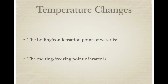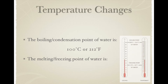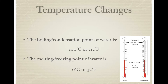Look at the middle of the sheet at the temperature where these changes happen. For water, the boiling and condensation point is 100 degrees Celsius, or 212 degrees Fahrenheit. The melting and freezing point of water is 0 degrees Celsius, or 32 degrees Fahrenheit. The difference is whether thermal energy is entering or leaving the water as to which phase change is occurring.